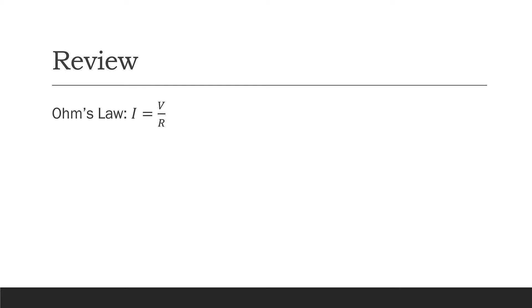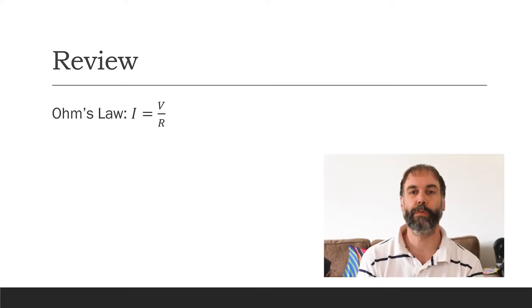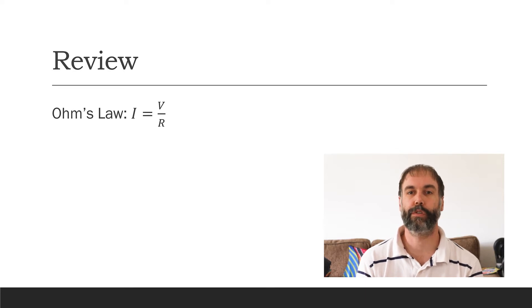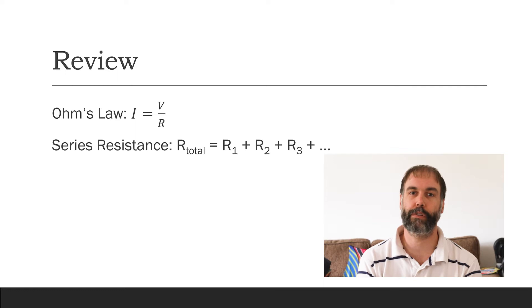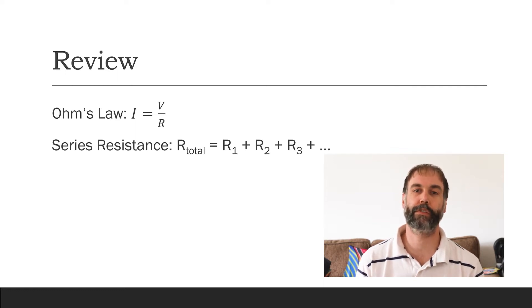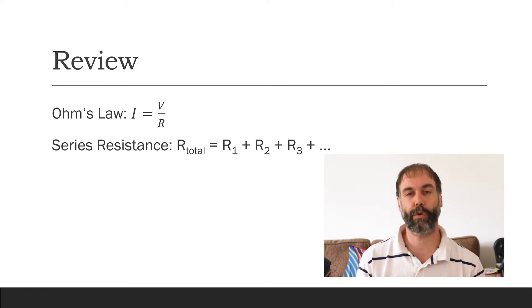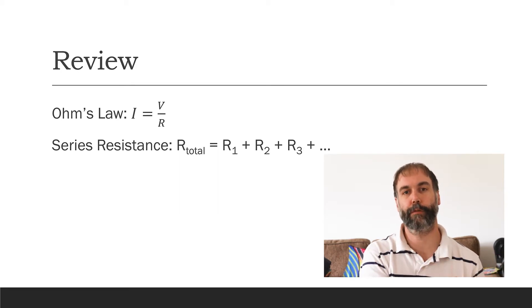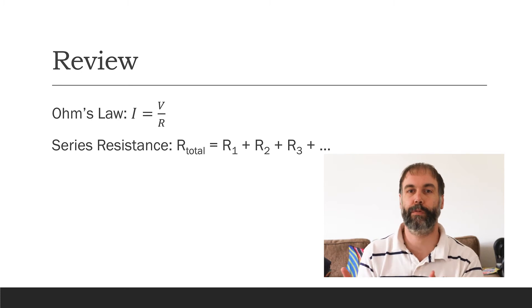Let's begin with our review. Ohm's Law says that current equals voltage over resistance: I equals V over R. In a series circuit, the total resistance is the first resistance plus the second resistance plus the third resistance, and so on and so forth.